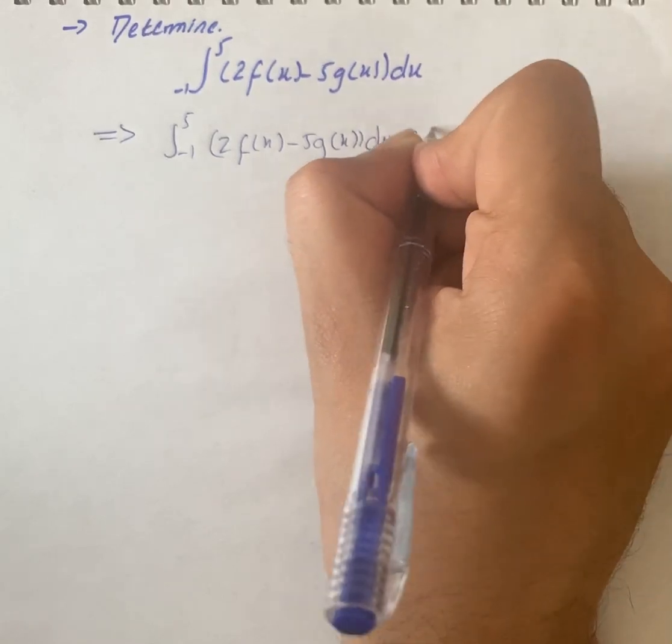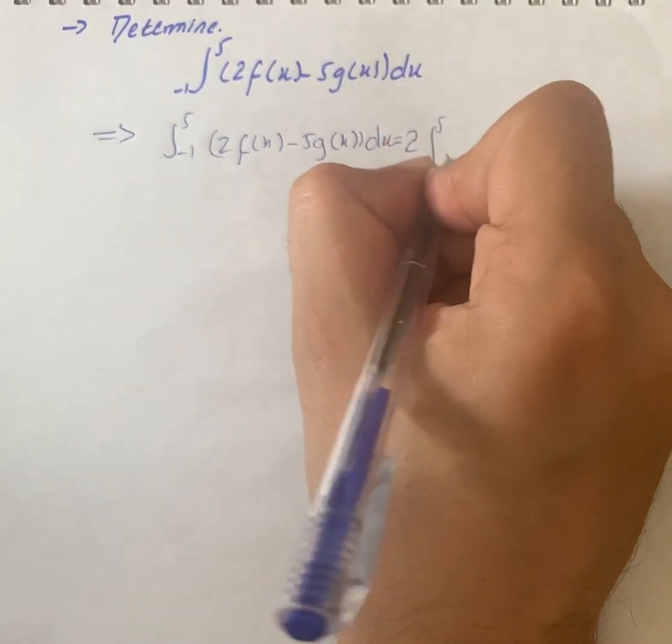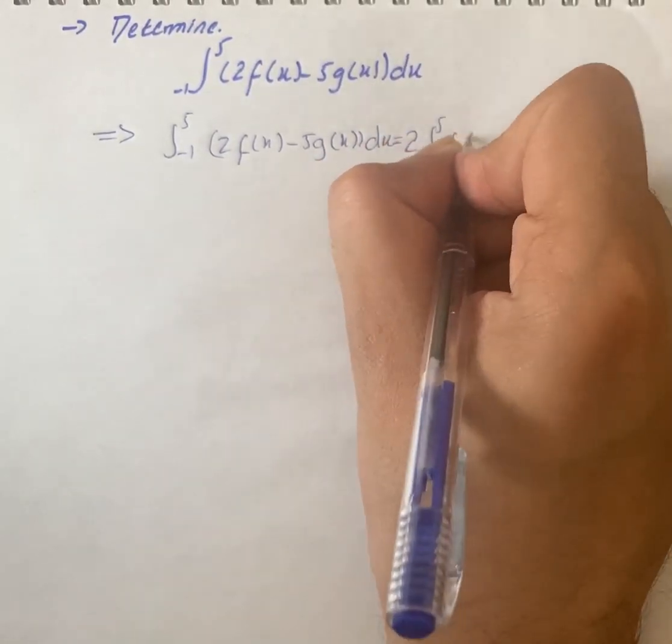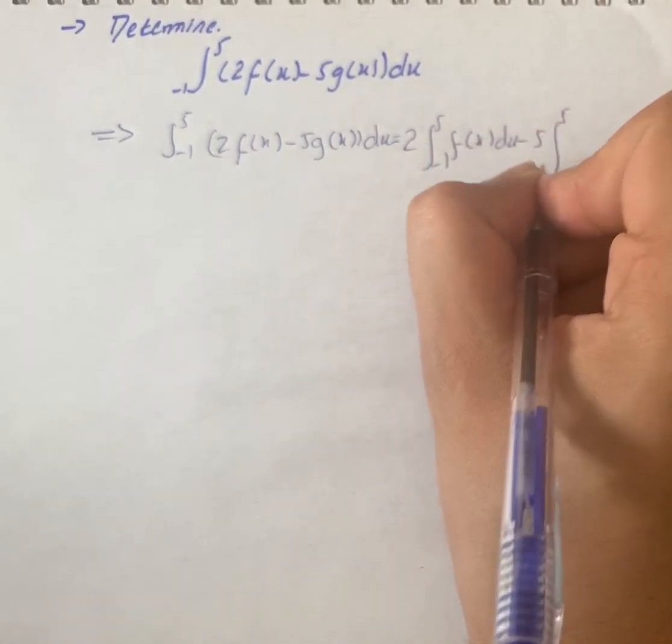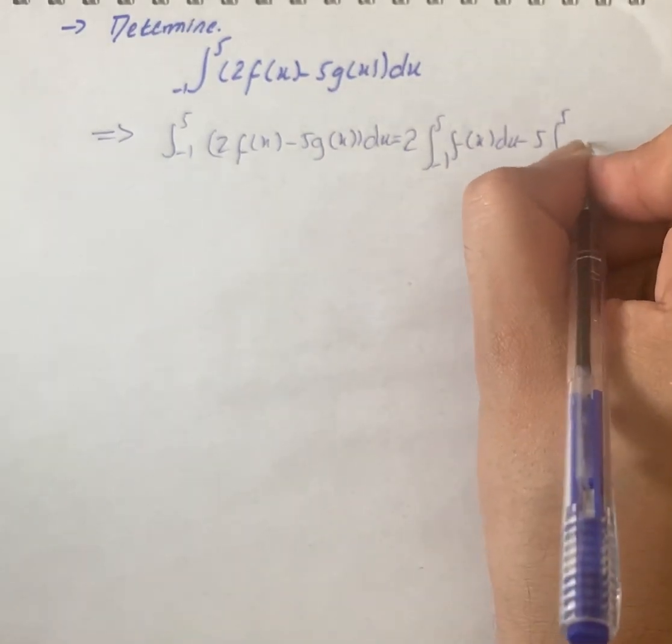That is equal to 2∫[1,5]f(x)dx minus 5∫[1,5]g(x)dx. Then we have g(x)dx.